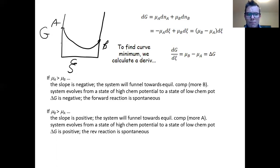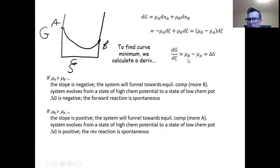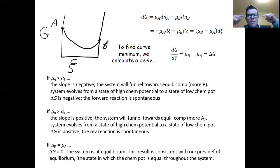The exact opposite is true if μB is greater than μA. In that case the slope is positive — you're in the right region — and the system funnels you the other way, making more A. The system evolves from high chemical potential to lower chemical potential. Mathematically, you now have a positive delta G, corresponding to a spontaneous reverse reaction. Last, if μB equals μA, delta G is zero — that is equilibrium. This is consistent with our previous definition: chemical equilibrium is the state where the chemical potential is equal throughout the system.